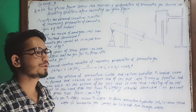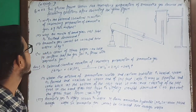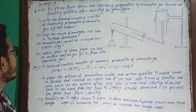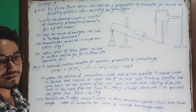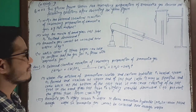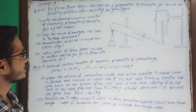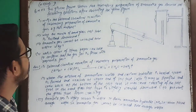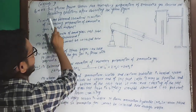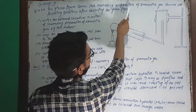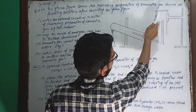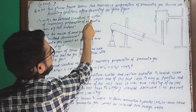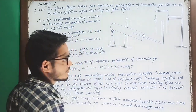Namaste. Today I am going to teach about Group D, question number 22, Chemistry. This question is from the chapter of some gases, Class 10. The question is: the given figure shows the laboratory preparation of ammonia gas. Answer the following questions after observing the given figure.